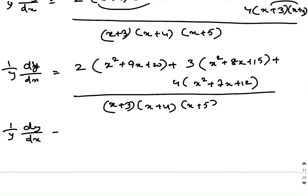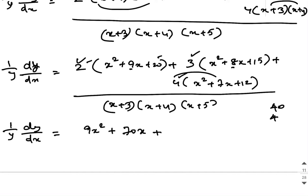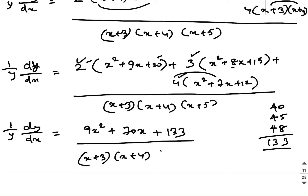So 1 by y into dy by dx equals: combining the x² terms gives 2x² plus 3x² plus 4x² which is 9x². For the x terms: 2 into 9 is 18, plus 3 into 8 is 24, plus 4 into 7 is 28, giving a total of 70x. For the constant terms: 2 into 20 is 40, plus 3 into 15 is 45, plus 4 into 12 is 48, giving 133. So the numerator is 9x² plus 70x plus 133, all divided by (x plus 3)(x plus 4)(x plus 5).